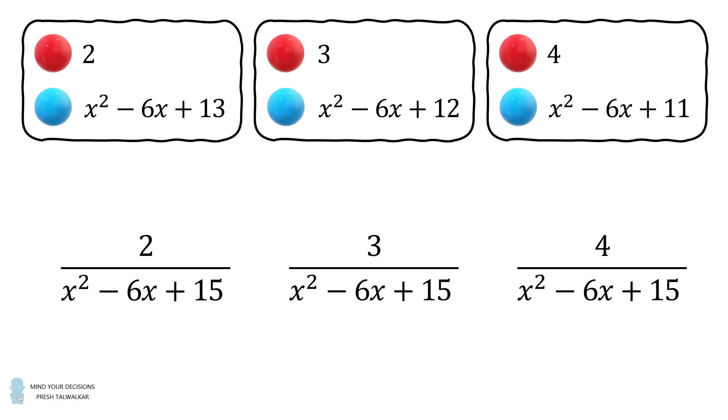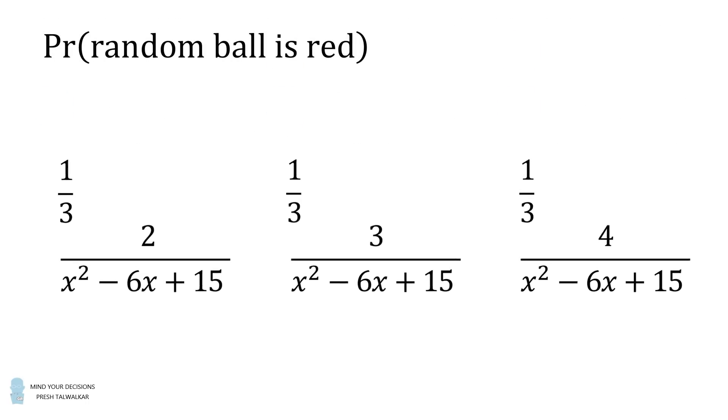Each of the three bags is equally likely to be chosen, so each bag has a one-third chance of being drawn. We can thus calculate the probability that the randomly chosen ball is red by taking the weighted sum of these three probabilities.